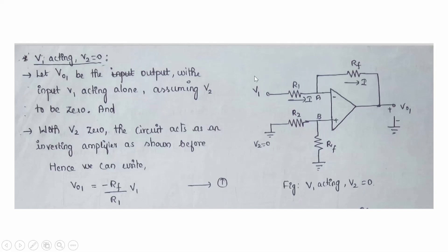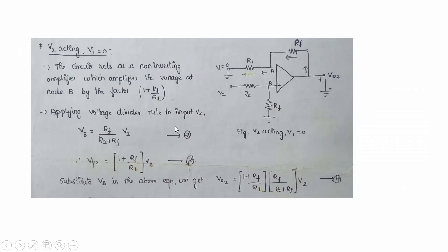We analyze using superposition. Case 1: V1 is acting and V2 = 0. The circuit acts as an inverting amplifier with V1 as input and the non-inverting terminal grounded through R2 and Rf. Using the inverting amplifier formula Vo = −(Rf/R1) × Vin, the output for case 1 is Vo1 = −(Rf/R1) × V1.